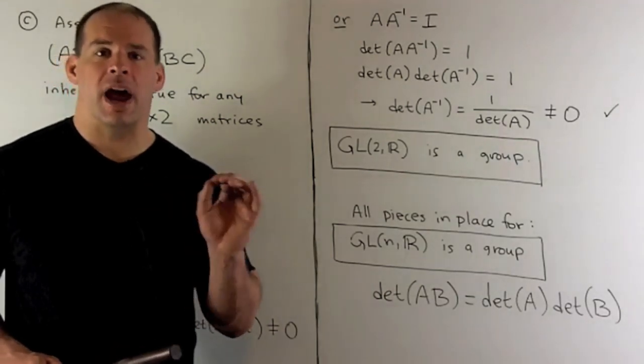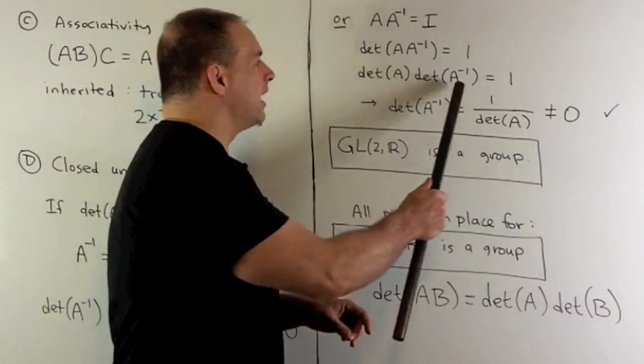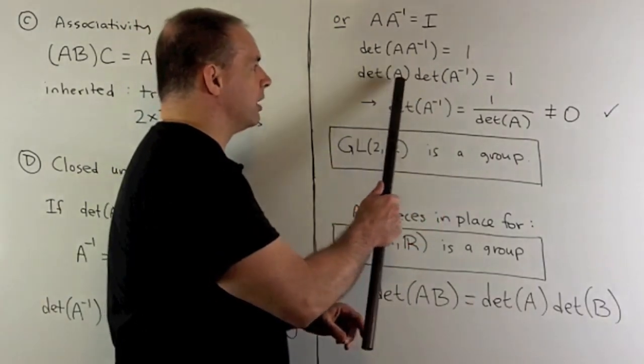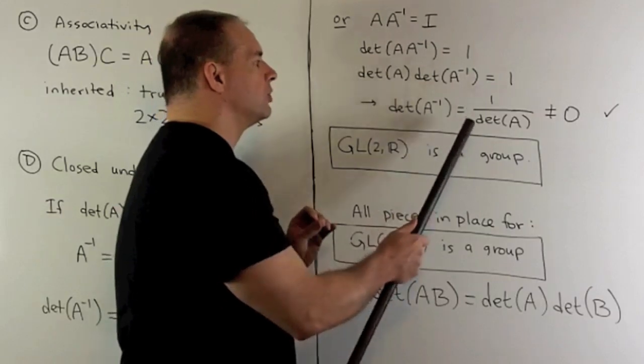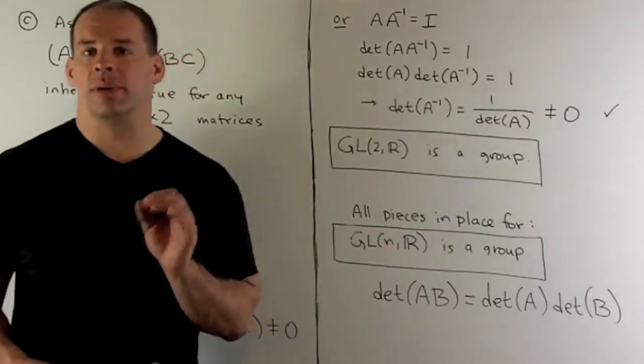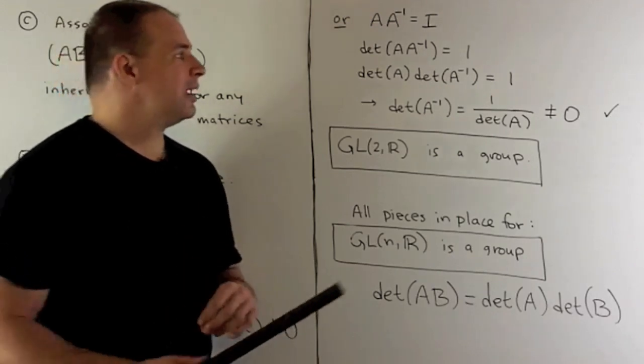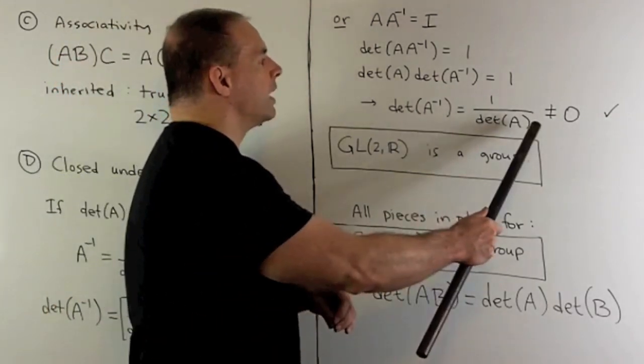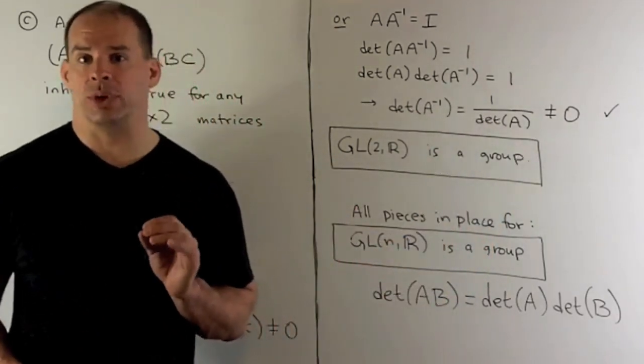I could write the determinant of a product as the product of the determinants, and then I just divide both sides by determinant of A. So determinant of A inverse equals one over determinant of A. If determinant of A was non-zero, then flipping it over stays non-zero. So note this works for general square matrices and it also checks our calculation in the two by two case.